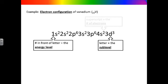The superscript number indicates the number of electrons present on the sublevel. Notice that all the sublevels have the maximum number of electrons allowed except for the last sublevel, which may or may not be completely filled.